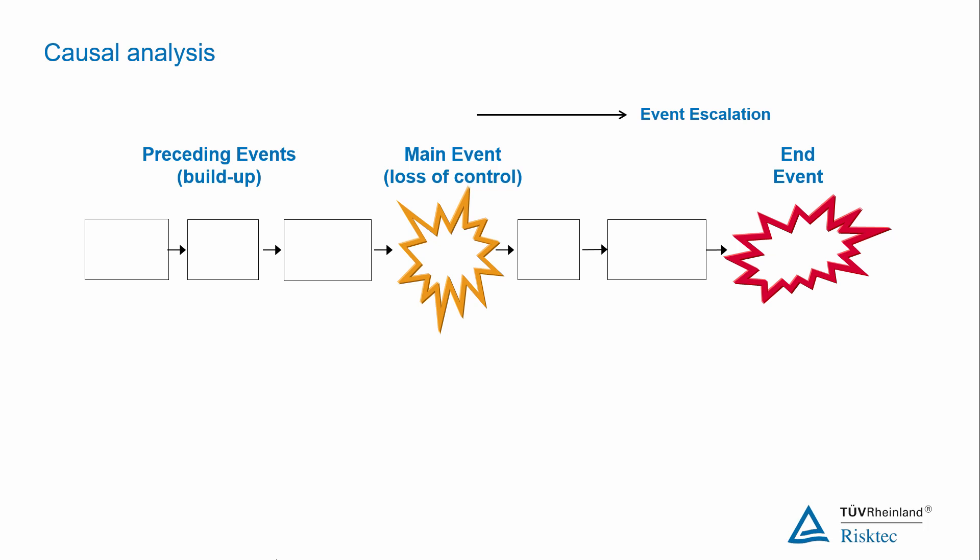This diagram shows the main event which is the loss of control and this is usually identified first. Then you need to work backwards through the preceding events and look at the sequence of events that led to the main event.